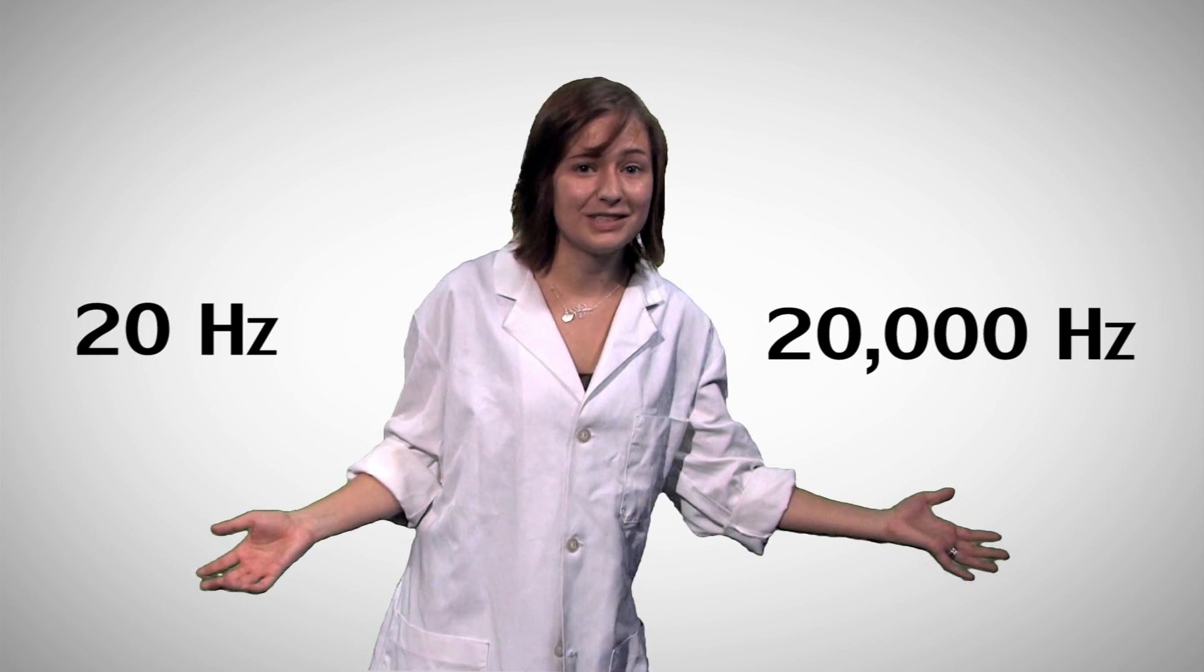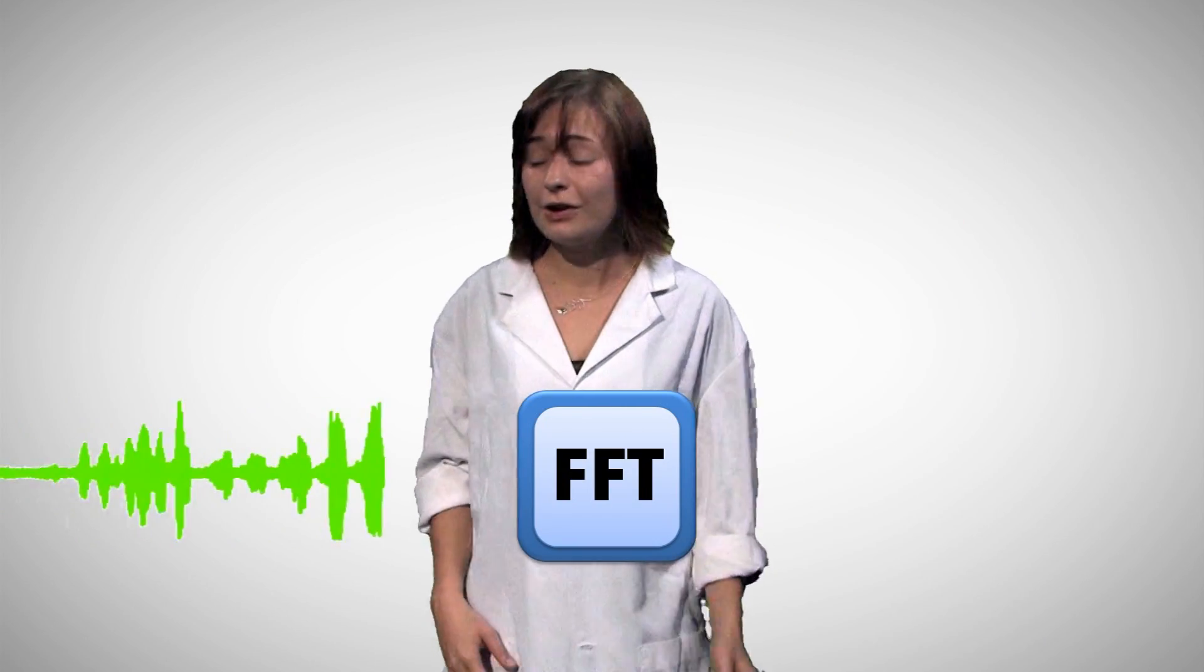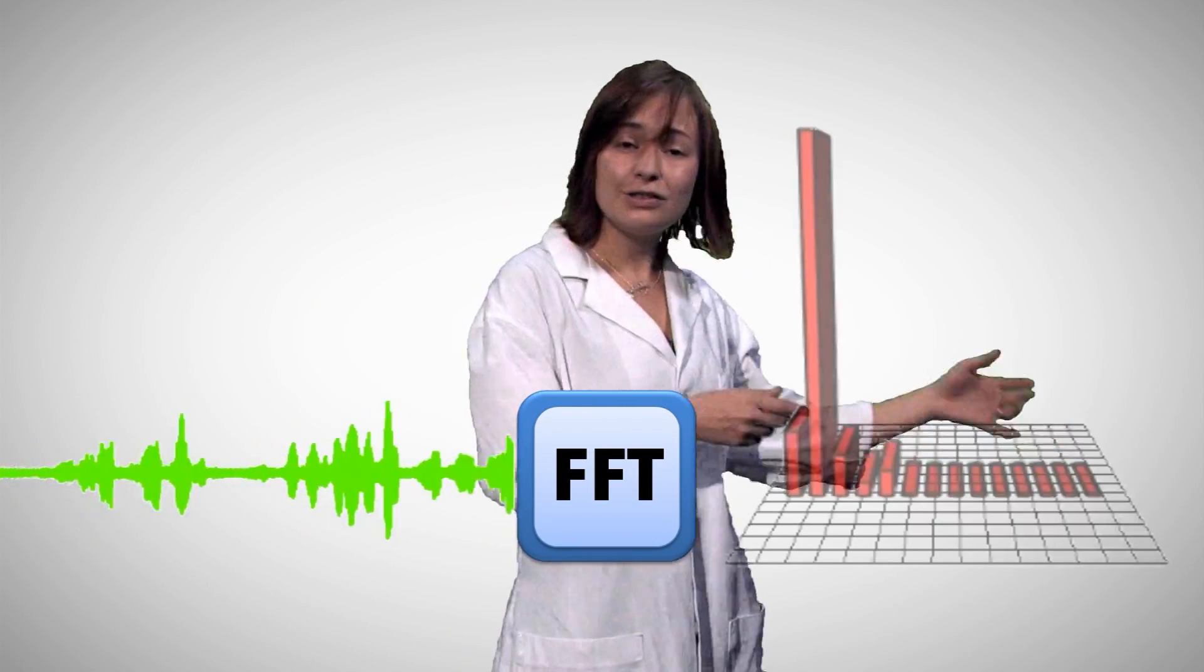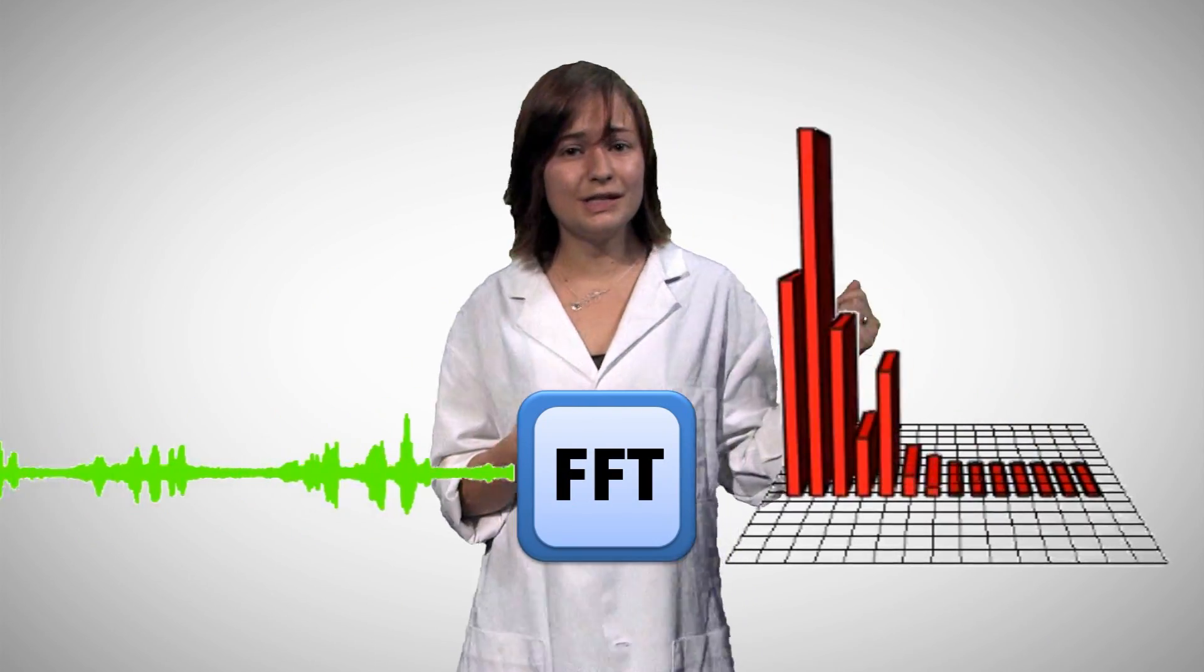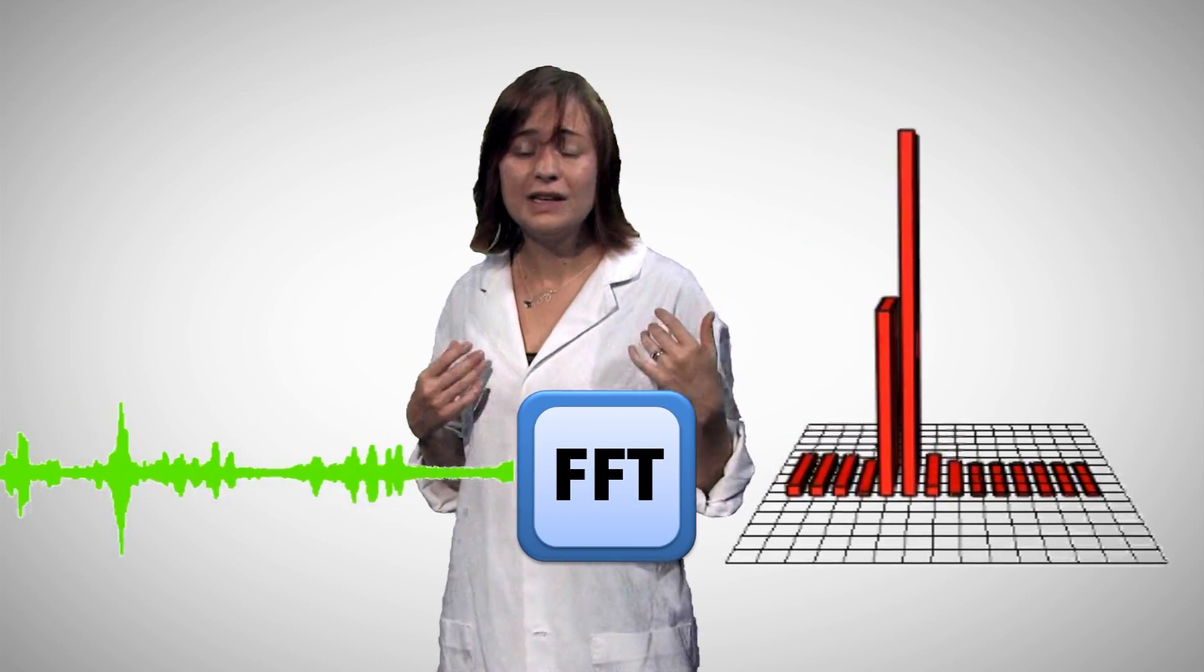Every sound we hear is made up of many different frequencies, from 20 Hz to 20,000 Hz. We can use an efficient algorithm or a fast Fourier transform, also known as an FFT, to convert from the time domain to the frequency domain. The frequency domain allows us to see how much of each frequency makes up a sound.